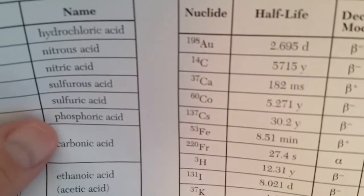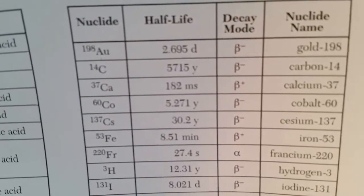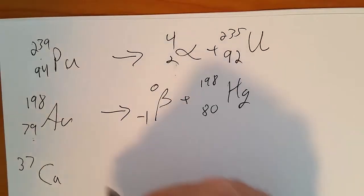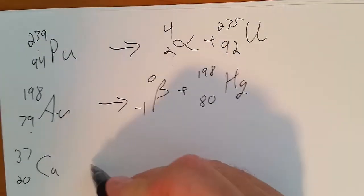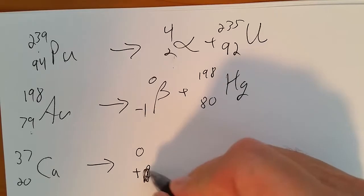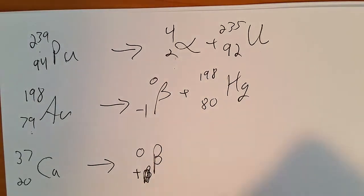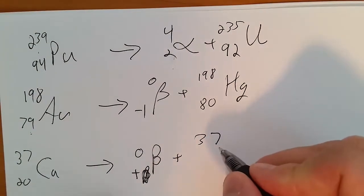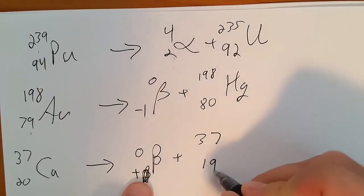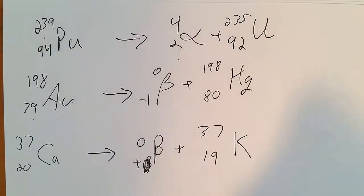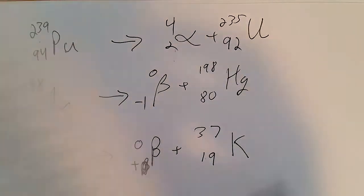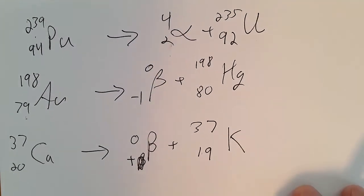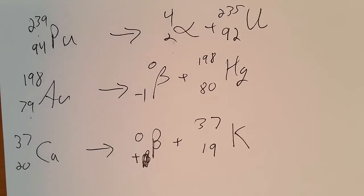We'll do one for positron emission. Calcium-37 undergoes positron emission. Ca-37, we see it's element 20, going to undergo positron emission. 37 minus 0 is 37, 20 minus 1 is 19. Element 19 is potassium. Those were examples of spontaneous decay or natural transmutation.